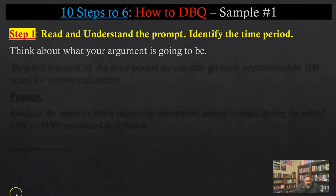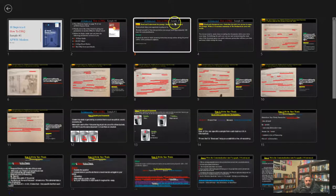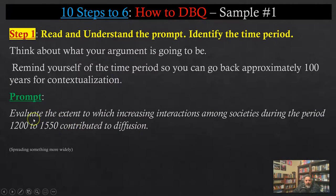So you've got to use it. Read and understand the prompt. Here's the prompt: 'Evaluate the extent to which increasing interactions among societies during the period 1200 to 1550 contributed to diffusion.' If you don't know what diffusion means, you're in trouble. Research has shown that when students get a question wrong, a lot of the time it's not that they couldn't do the critical thinking — it was a vocabulary issue. There was a word in the prompt they didn't know.